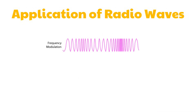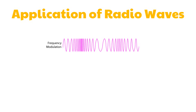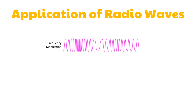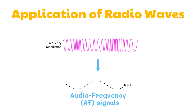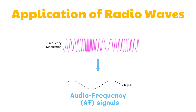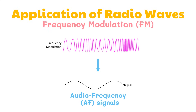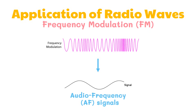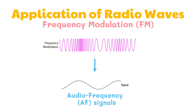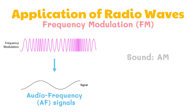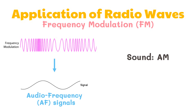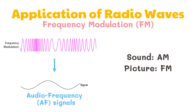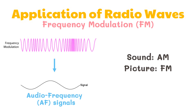Very high-frequency waves provide a higher quality of broadcasting, including stereo sound. In this process, instead of the amplitude of the RF carrier, it is the frequency of the waves that changes to match that of the signal. This is called frequency modulation or FM. When the radio wave is received by the antenna of a radio or television, the pattern is converted back to its original form. The sound portions of most television broadcasts are carried as AM waves, while the picture portions are carried as FM waves, transmitting sound and picture information over long distances.